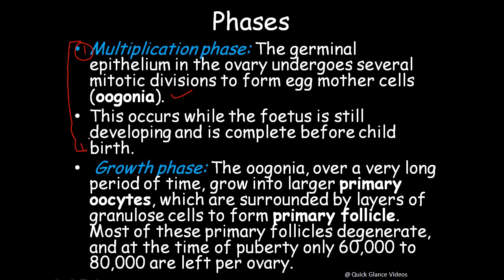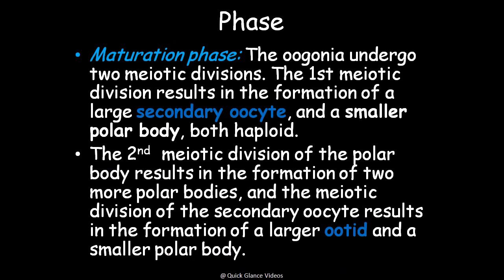Unlike in males where multiplication happens after sexual maturity, in females this process occurs before even the birth of the child. The second is the growth phase: the oogonia, over a very long period of time, grow into large primary oocytes. These are surrounded by layers of granulosa cells to form primary follicles. Most primary follicles degenerate over the years, and at puberty only 60,000 to 80,000 remain per ovary.